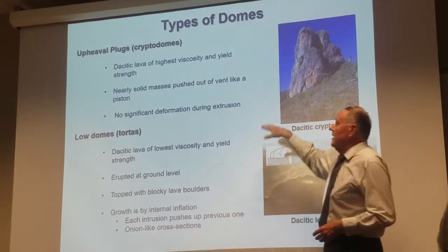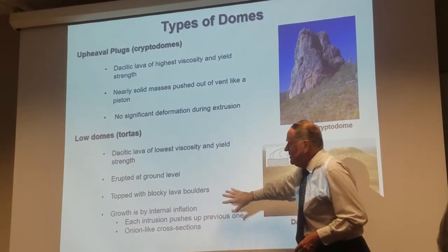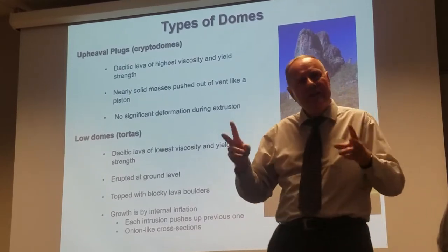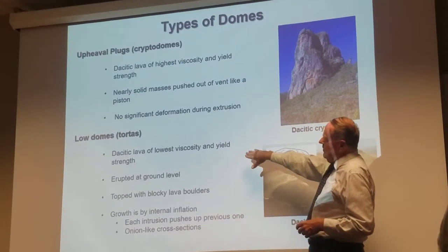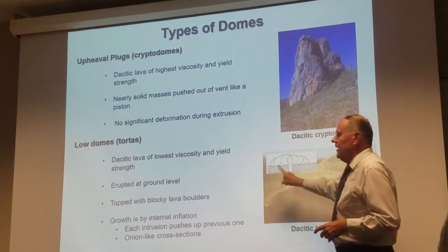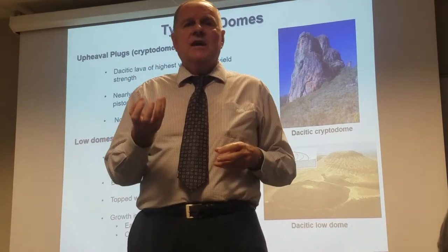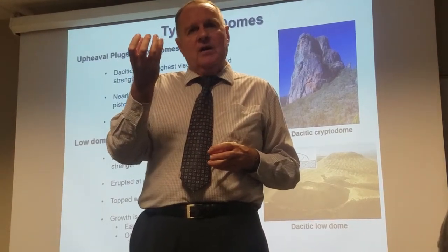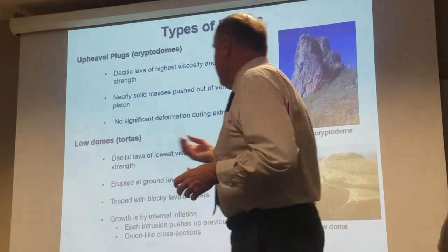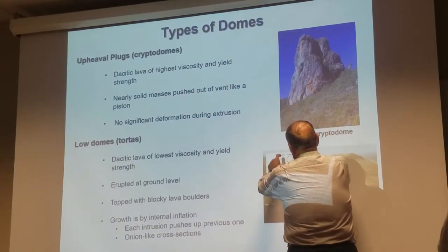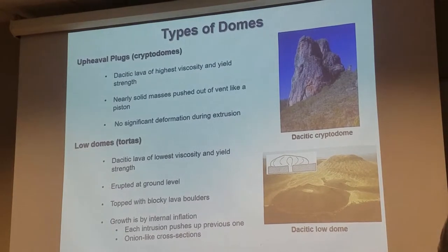Low domes are on the opposite end — relatively low viscosity for an acidic lava, very low yield strength. As it pushes up, it's like inflating a balloon, but it has low enough viscosity that it can't build vertically. It simply sags under the influence of its own weight — building up from the center like inflating a balloon and expanding or sagging outward.